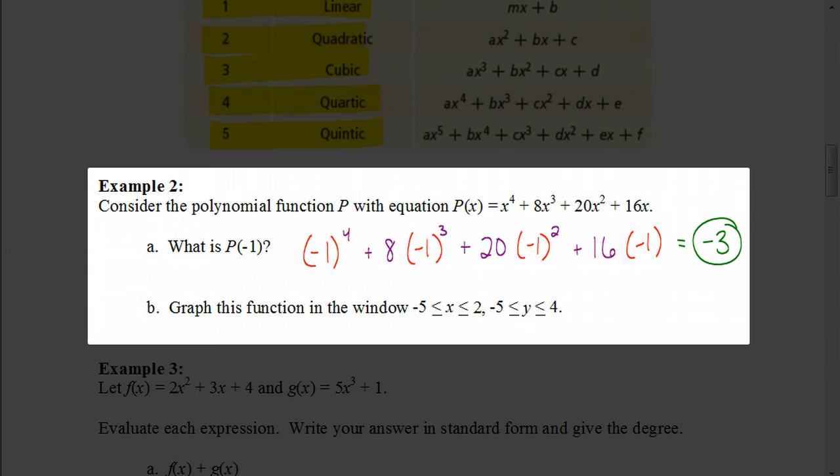So we want to have on our window, we want to have negative 5 be the smallest value for x, and 2 being the largest value for x. And we want negative 5 to be the smallest value for our y-axis, and 4 to be the largest value on our y-axis. So let's look at how we would do that first, and then we will graph that polynomial, the x to the 4th plus 8x cubed plus 20x squared plus 16x.